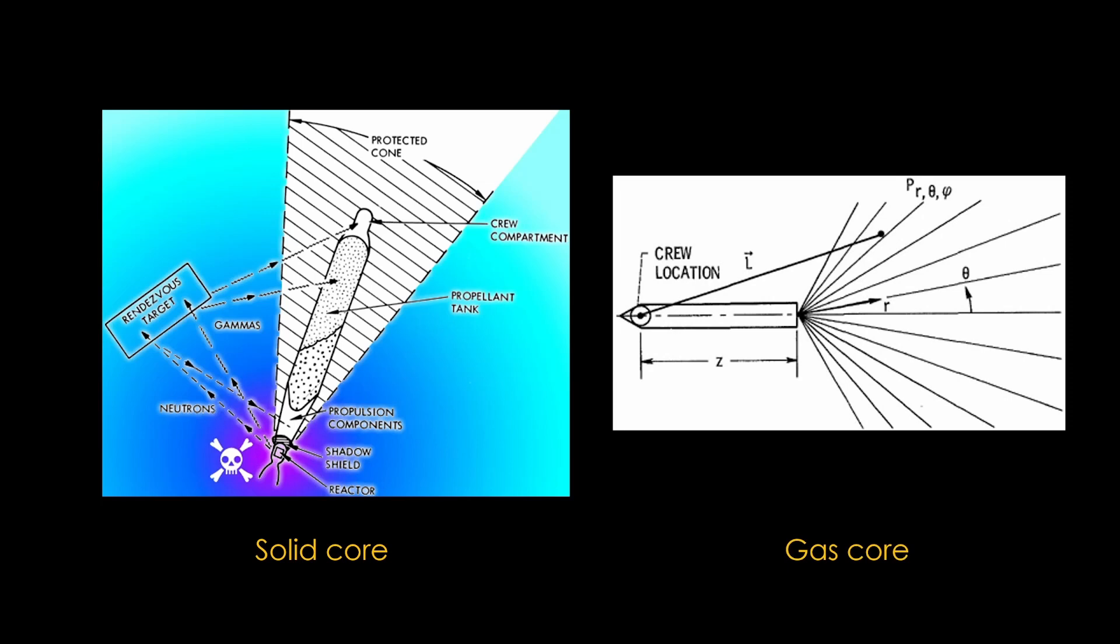In the open gas core, you have still fissioning nuclear fuel exiting through the nozzle and spreading out, and that fuel is emitting a lot of radiation. It's unfortunately outside the shadow, and therefore irradiates the crew location directly.